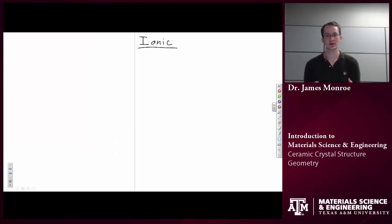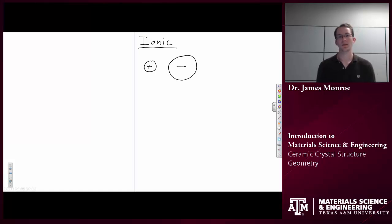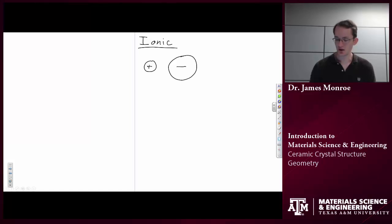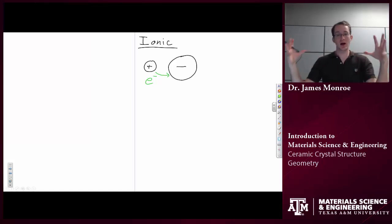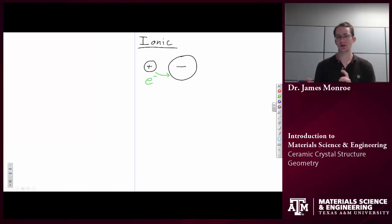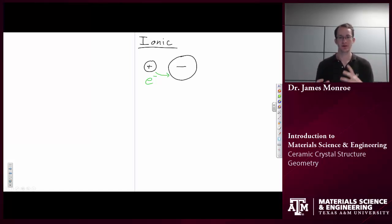Moving on to ionic bonding: when you have an ionic bond, you have two dissimilar elements, one positively charged and the other negatively charged. The negatively charged ions — the anions — will be larger than the positively charged ions. That's because electrons have moved from one atom to another; the more electrons an ion has, the larger it appears. Because we have different sized spheres, we're going to pack them differently than we would same-sized atoms. We don't have close-packed structures of all the same sphere size; we have different structures.